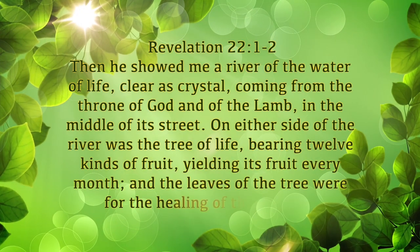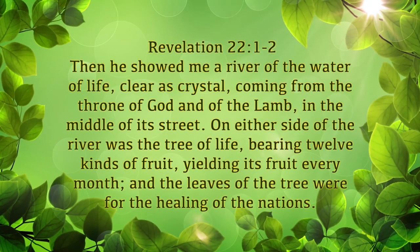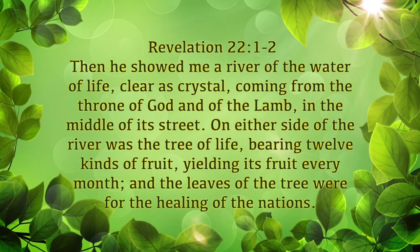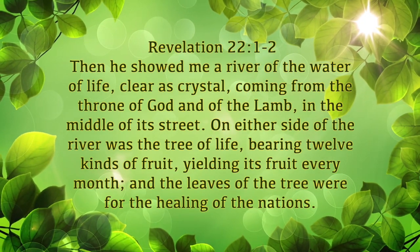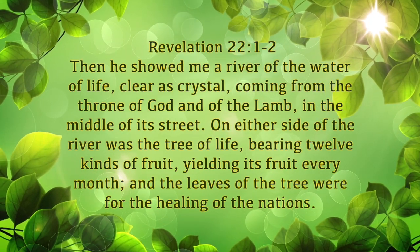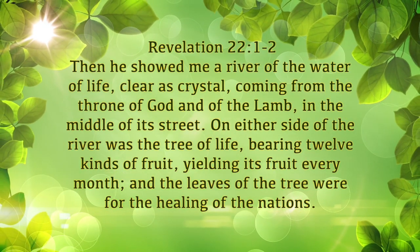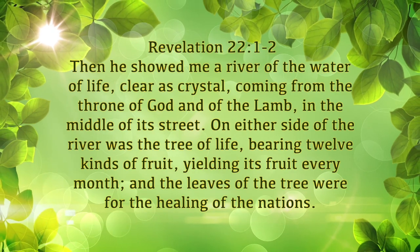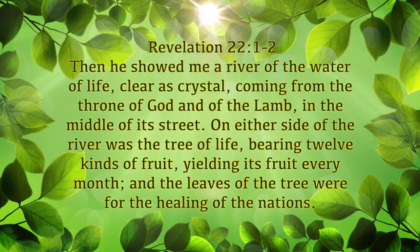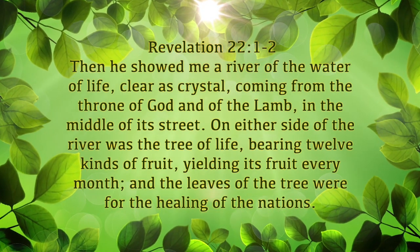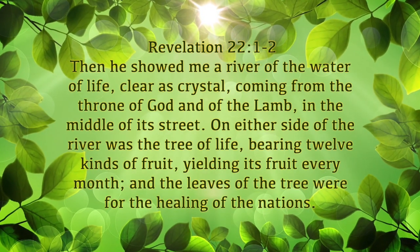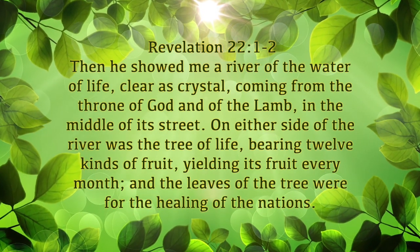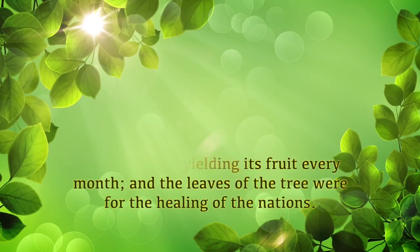And so what John saw — he says, 'He showed me a river of the water of life, clear as crystal, coming from the throne of God and of the Lamb in the middle of its street. On either side of the river was the tree of life bearing 12 kinds of fruit, yielding its fruit every month. And the leaves of the tree were for the healing of the nations.'